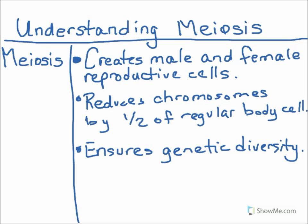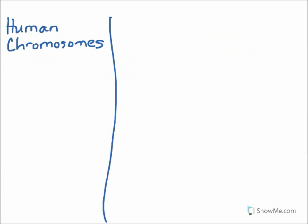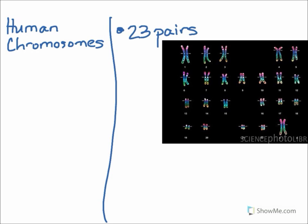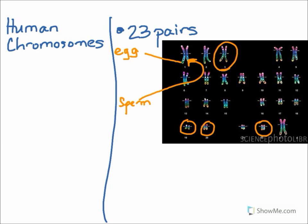First, we have to take a look at chromosomes. Human body cells have 23 pairs of chromosomes. Each pair is a set of homologous chromosomes. This means that chromosome 1 from the egg matches up with chromosome 1 from the sperm. Chromosome 3 from the egg matches up with chromosome 3 from the sperm, and so on for every single chromosome. It has a matching chromosome from the opposite reproductive cell.